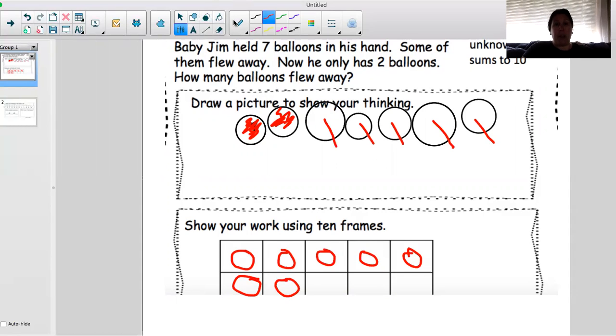And now he only has two balloons. So we're going to cross out those two. Because he has two, he started with seven and now he only has two. So those five that remain are how many balloons that flew away.